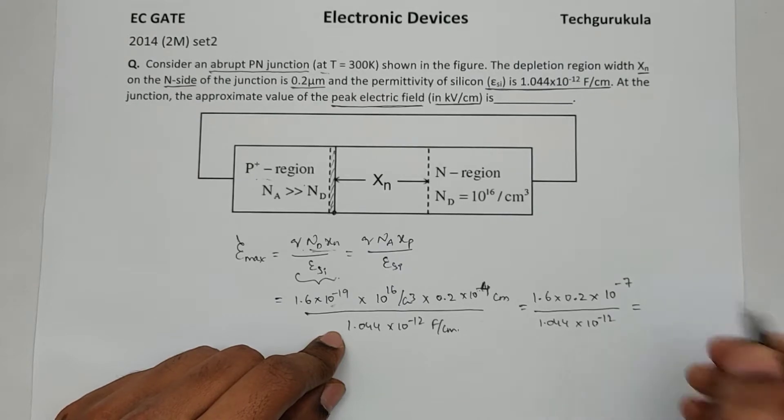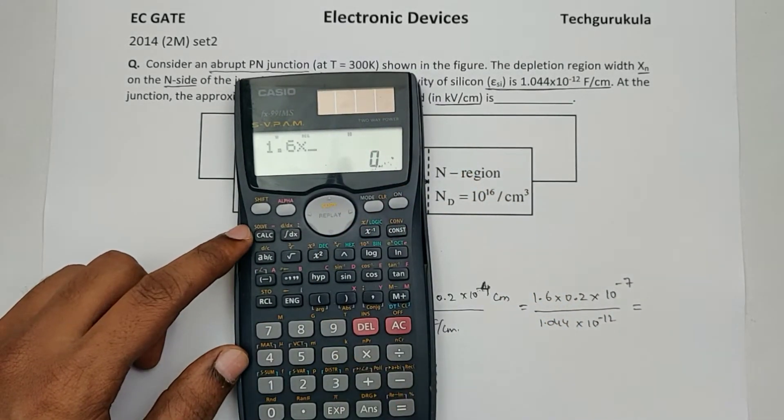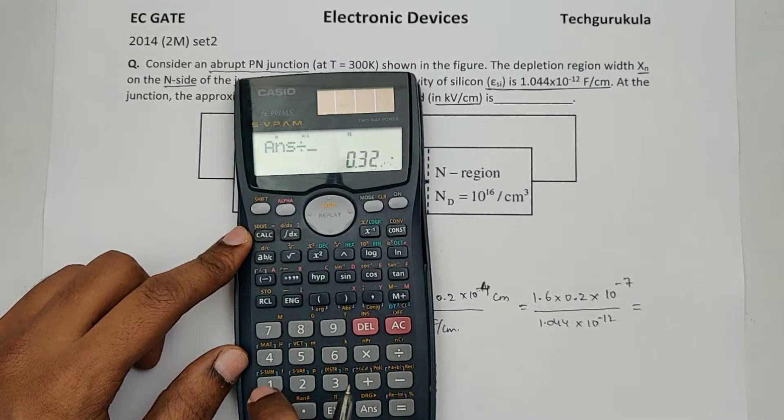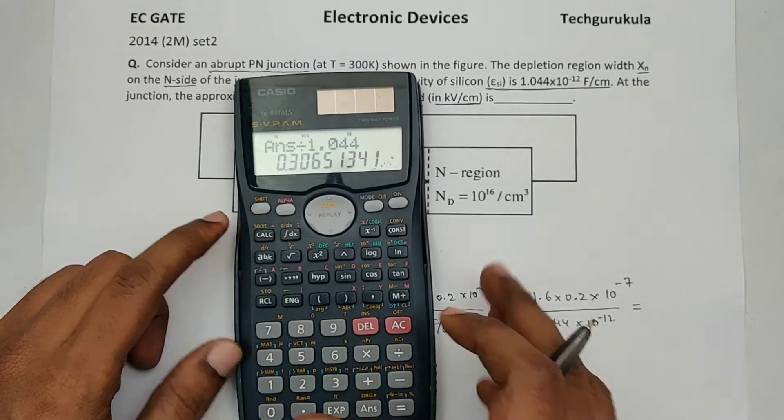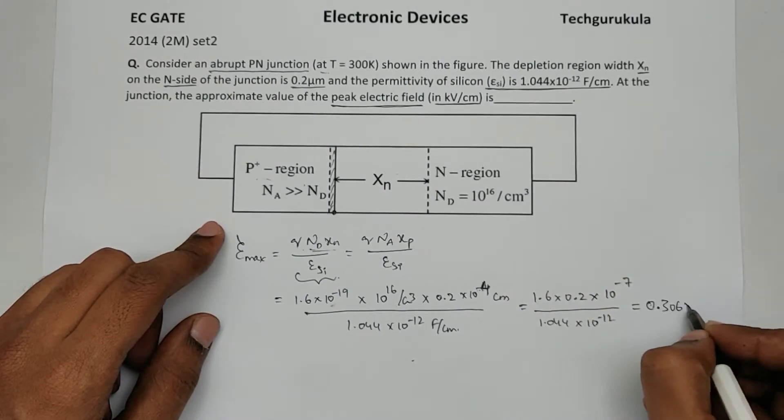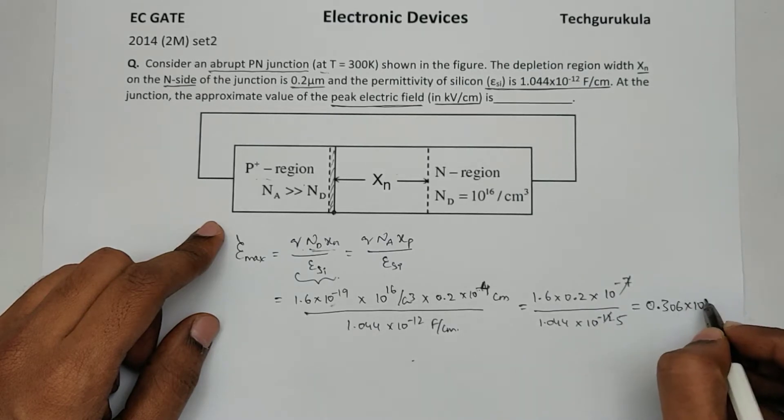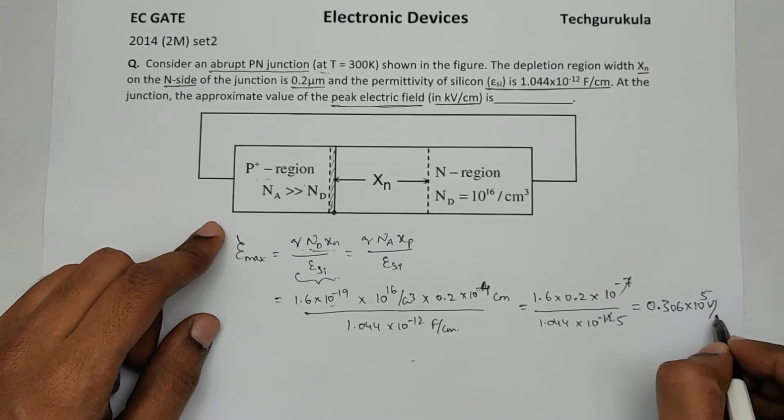We can write this equal to, so let me find this value, 1.6 times 0.2 equals to divided by 1.044, this is 0.306 times 10^7. It becomes -5 when we take it to the top, it's 10^5 volt per centimeter.